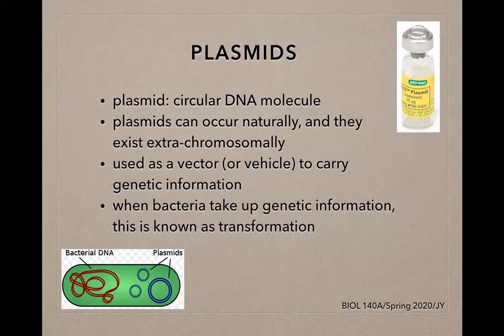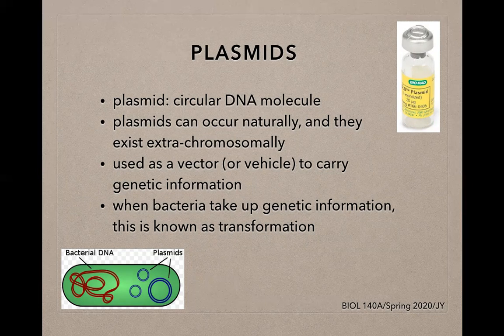Plasmids are circular DNA molecules that can occur naturally and typically exist outside of the bacterial chromosome. In laboratory experiments, plasmids are used as vectors to carry genetic information into bacterial cells. When bacterial cells take up this genetic information, we call this process transformation. In this experiment our plasmid is named PGLO.